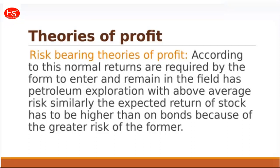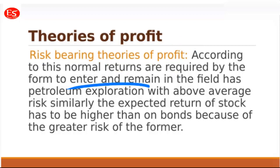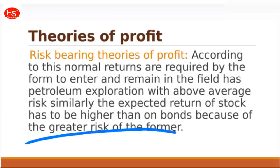The first is the risk-bearing theory of profit. Normal returns are required by a firm to enter or remain in risky fields such as petroleum exploration. The expected return on stocks must be higher than on bonds because of greater risk. A firm bearing higher risk may earn higher profit, while industries that are less risk-taking earn a lower rate of profit.